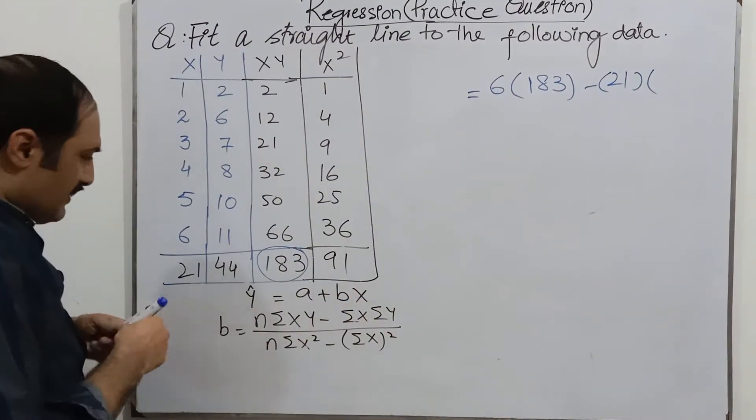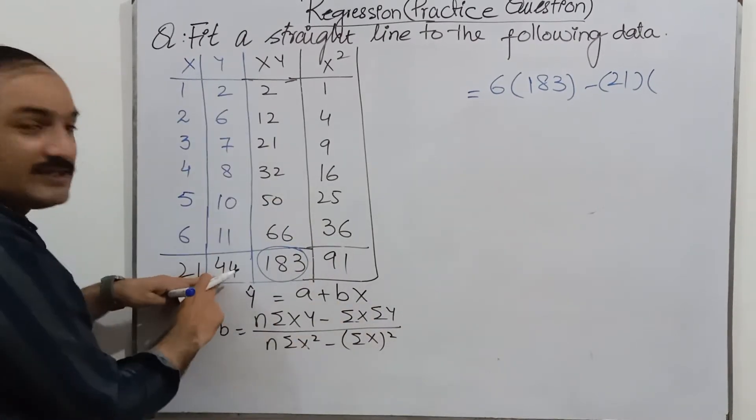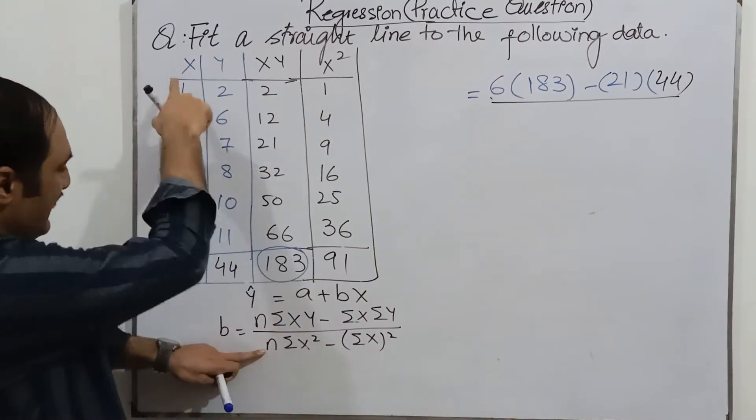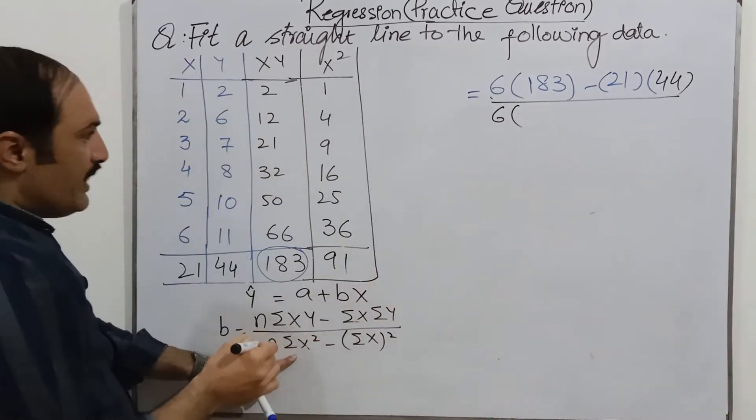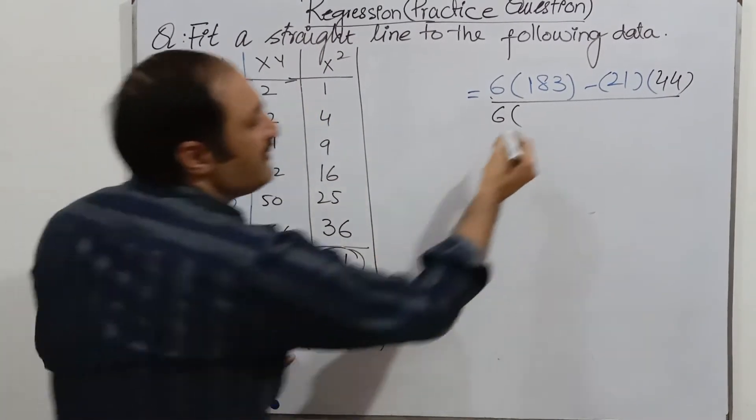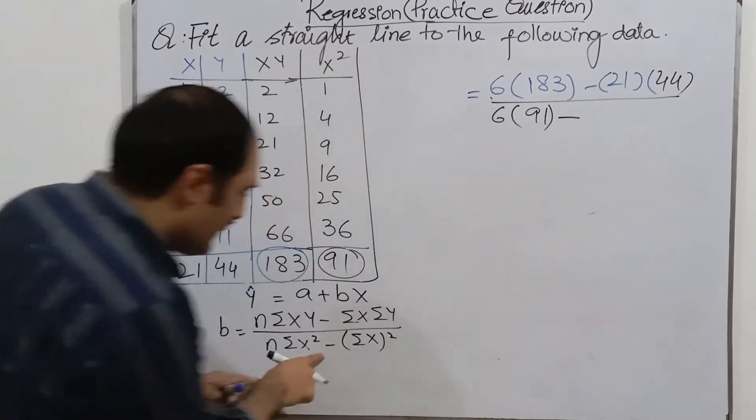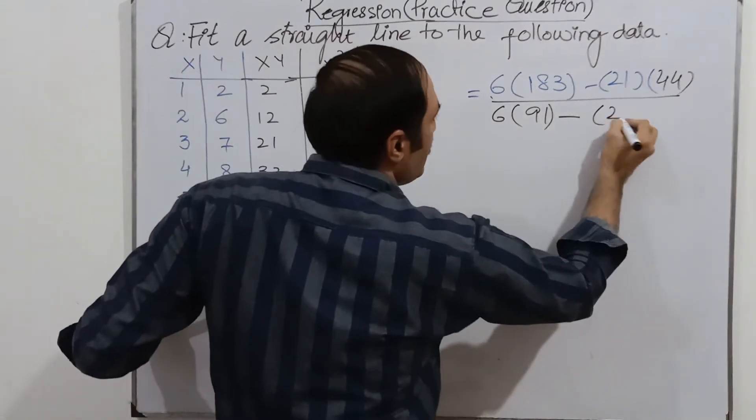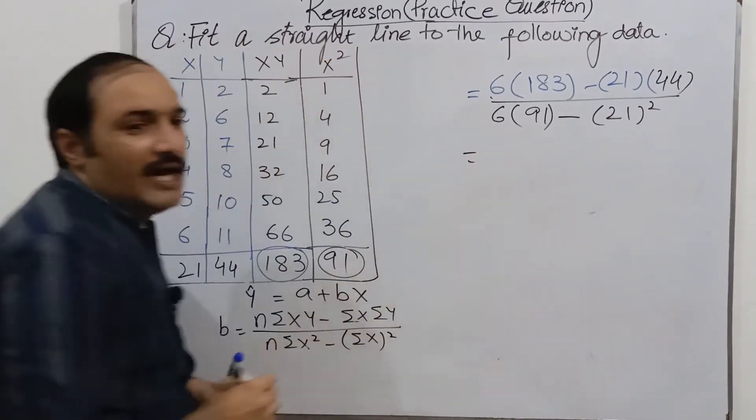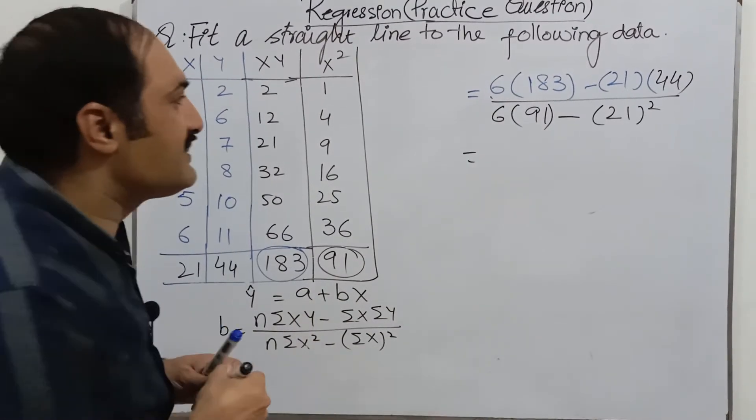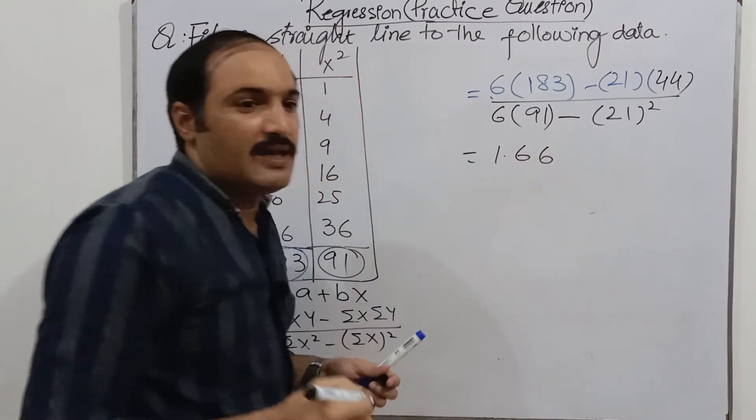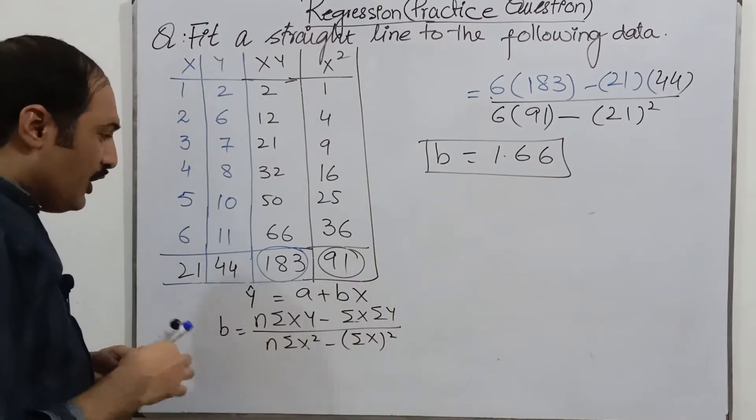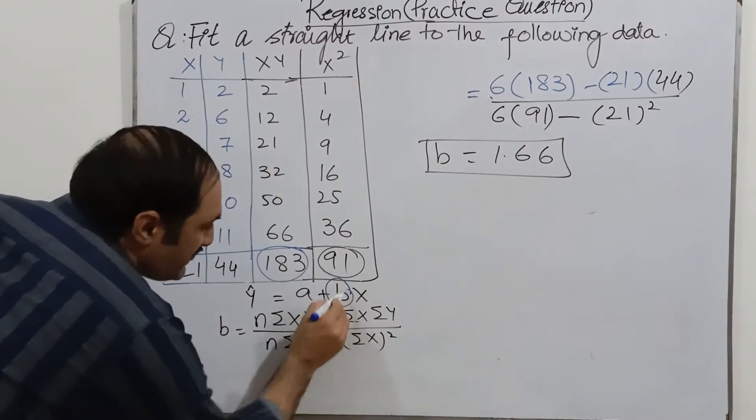Minus summation x is, but here its sum is twenty one into summation y, its sum is forty four, well done forty four, over n is. What is n? n is six into x square, x square sum is ninety one, minus summation x sum is twenty one, well done twenty one whole square. So after computing these observation into the calculator its answer is one point double six. No it is B, B means slope.